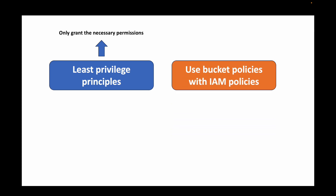Bucket policies is one of the mechanisms to control access to your S3 buckets and the objects inside. Now let's look at best practices for S3 bucket policies. First, follow the least privilege principle — only grant the necessary permissions and keep permissions as restricted as possible. Also, combine bucket policies with IAM policies for better control over your S3 bucket.